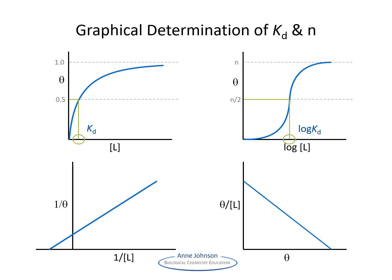A double reciprocal plot arises from a rearrangement of the theta expression. This plot, because it gives a nice straight line, is better than the other two plots at allowing us to determine the Kd and N values without a curve fitting program. The x-intercept is minus 1 over Kd, and the y-intercept is 1 over N. The Scatchard plot is very commonly used and is less error-prone than the double reciprocal plot. The y-intercept is N over Kd, and the x-intercept is N. A straight line on the Scatchard plot shows that the binding sites are independent of each other.